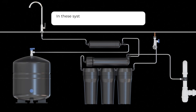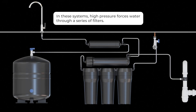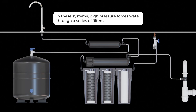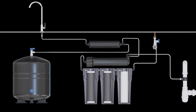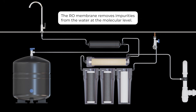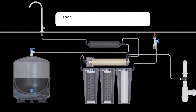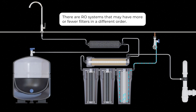In these systems, high pressure forces water through a series of filters, usually two or three on the bottom, with the reverse osmosis membrane on top that removes impurities from the water at the molecular level. Keep in mind that we're going to show one configuration — there are other RO modules that may have more or fewer filters in a different order.